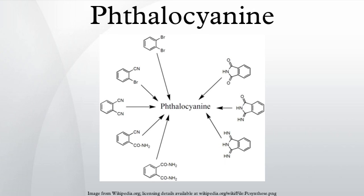Niche Applications. Metal phthalocyanines have long been examined as catalysts for redox reactions. Areas of interest are the oxygen reduction reaction and the sweetening of gas streams by removal of hydrogen sulfide. Phthalocyanine compounds have been investigated as donor materials in molecular electronics, for example organic field-effect transistors. Copper phthalocyanine may possibly be used as storage in quantum computing, due to the length of time its electrons can remain in superposition.